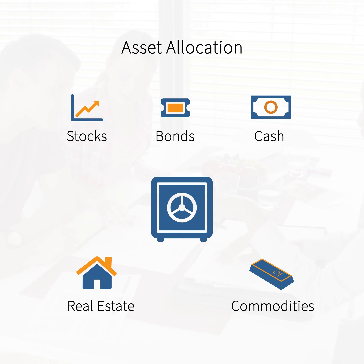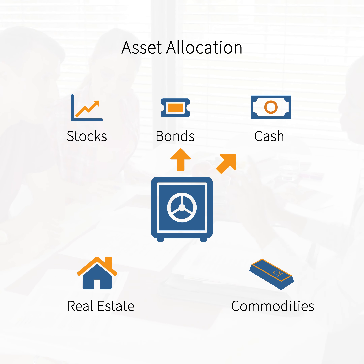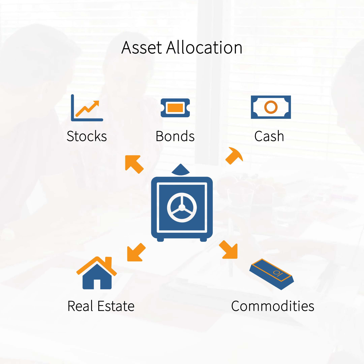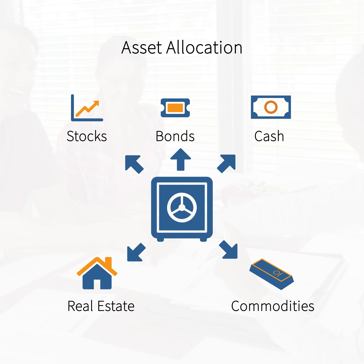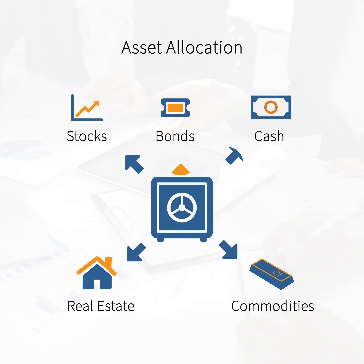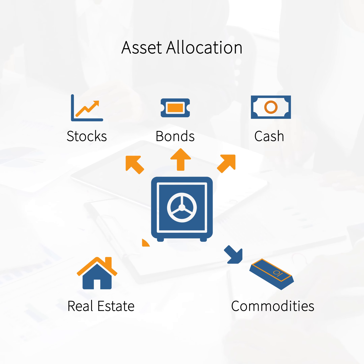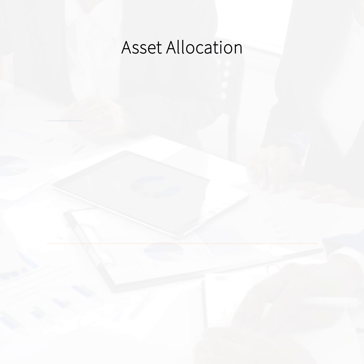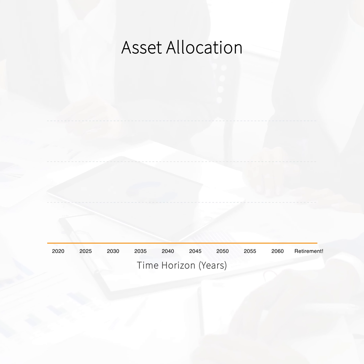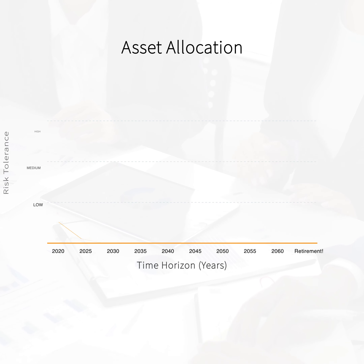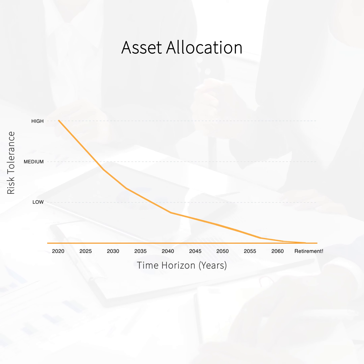It's never a good idea to put all your eggs in one basket, and when it comes to investing, you can avoid this through asset allocation. Asset allocation is the process of spreading your money or portfolio across different asset classes, like stocks, bonds, or cash.